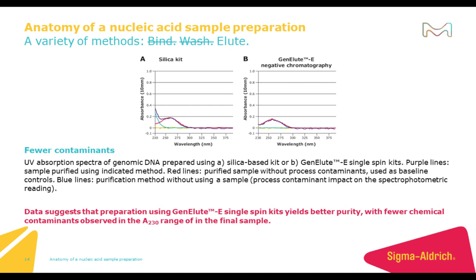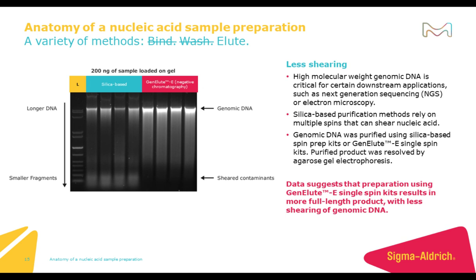Remember those pesky organic solvents and chaotropic salts from previous nucleic acid workflows? Shown here is an example of spectrophotometric data comparing silica-based protocols and the GenLuE Single Spin workflow. In purple is the sample purified by the different methods; in blue or teal is the purification without the sample added; in red is the sample without any process contaminants; and in yellow is the background blank for this analysis. As you can see, process contaminants can be observed from the silica method in the OD230 range.